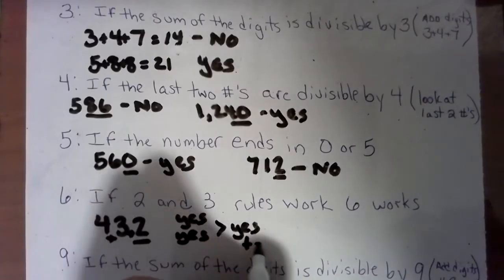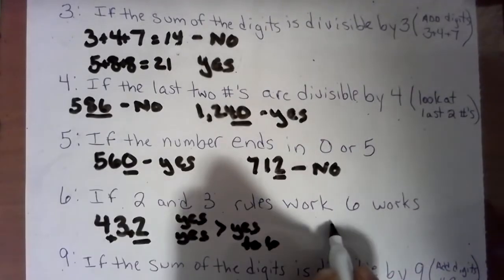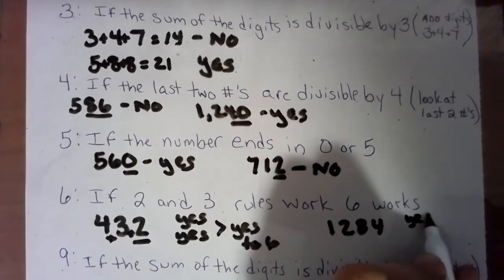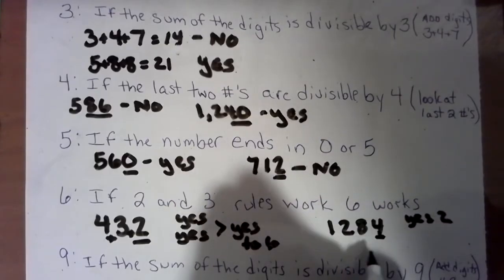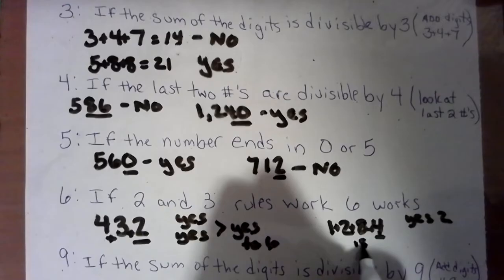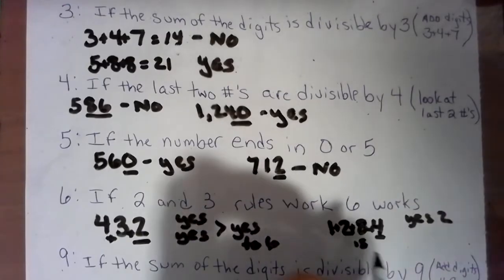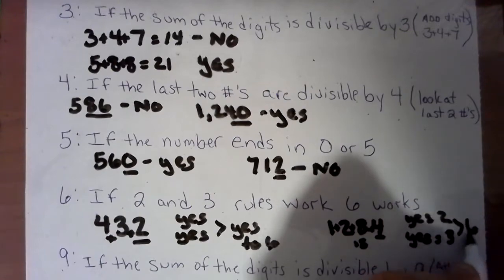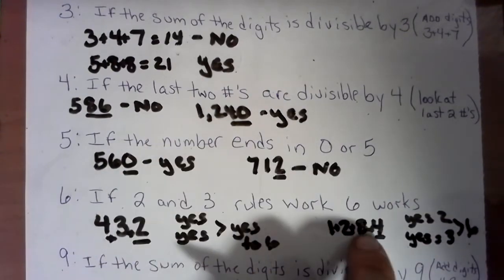So let's look at 1,284. It works for two, yes to two because of the even number. Let's add up these digits. So we have eight, nine, 10, 11, 12, 13, 14, 15. The sum of those digits is 15. Can three go into 15? Yes. So it works for two and three. That means it works for six.